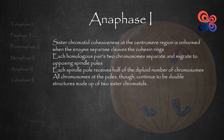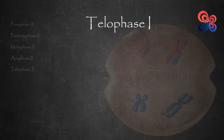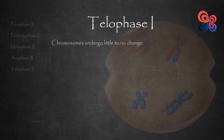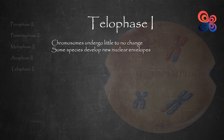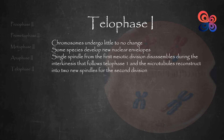With the exception of a small amount of decondensation in some species, the chromosomes undergo little to no change during the brief transitionary stage known as telophase 1. Some species develop new nuclear envelopes whereas others do not. The single spindle from the first meiotic division disassembles during the interkinesis that follows telophase 1, and the microtubules reconstruct into two new spindles for the second division.